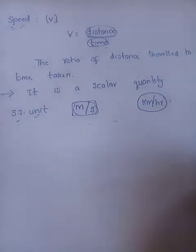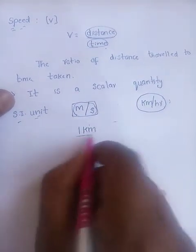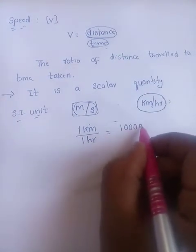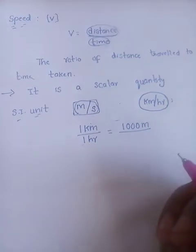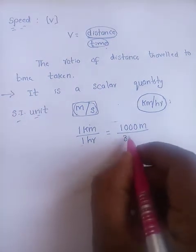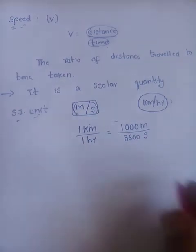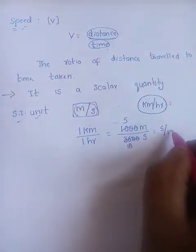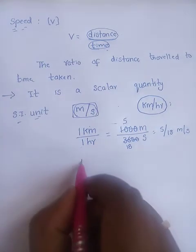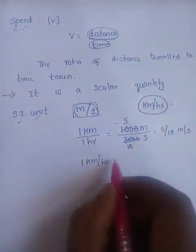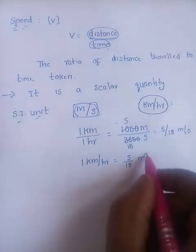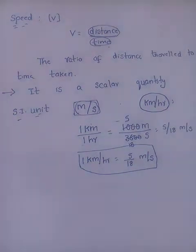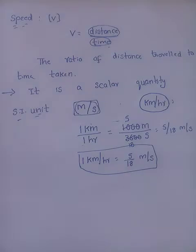How to convert kilometre per hour into metre per second: 1 kilometre per hour equals 1000 metres divided by 3600 seconds. Cancelling the zeros, we get 5 by 18 metre per second. So the relation is: 1 kilometre per hour equals 5/18 metre per second. Using this we can convert between kilometre per hour and metre per second.